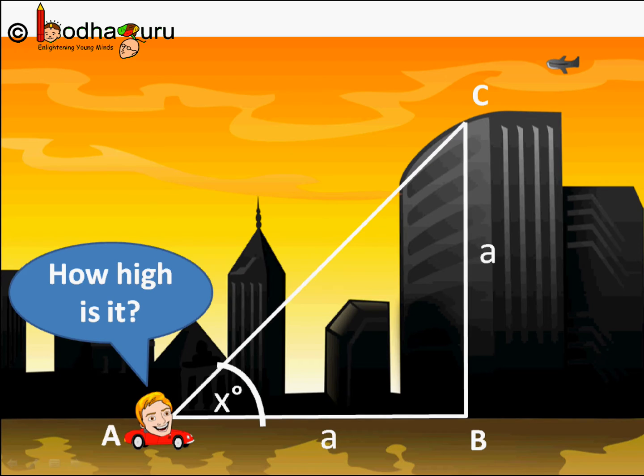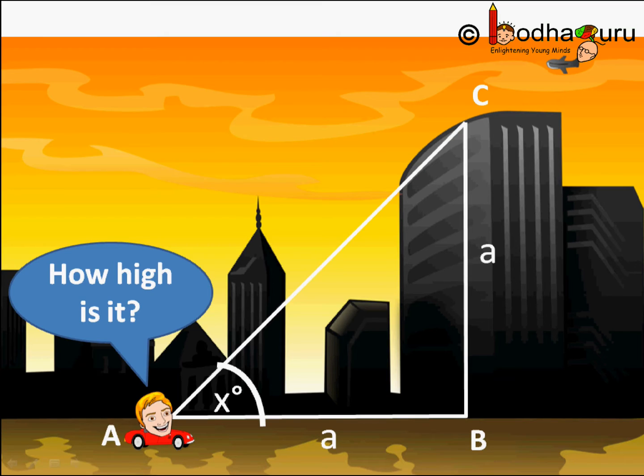So here is a man sitting in a car trying to figure out how tall is the building that he can see at a distance. Angle x is the angle between his sight and the ground.